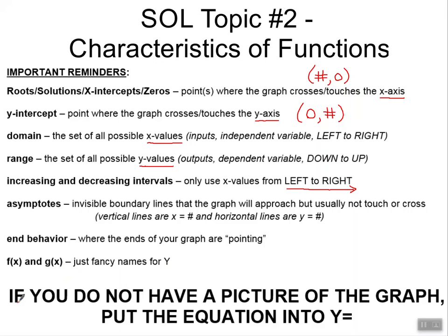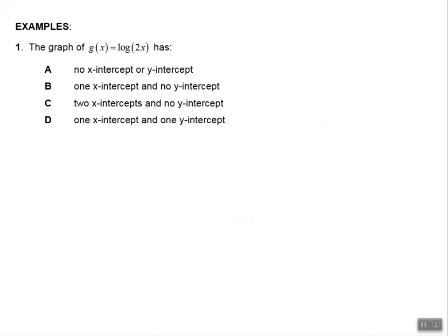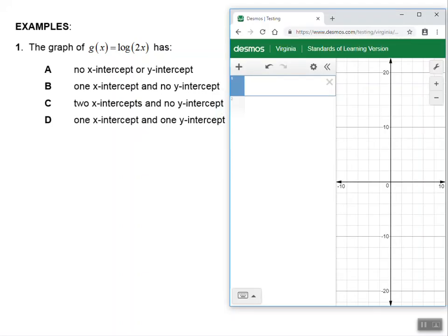Speaking of calculators, if you do not have a picture of your graph, please get your calculator out, type the equation in, and look at your graph. Let's take a look at our first example. We have that the graph of g of x equals the log of 2x has a bunch of things about intercepts.